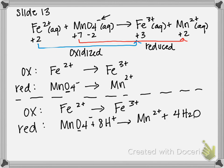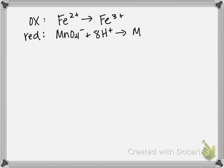I'm going to rewrite both of these on a new slide. My oxidation is still Fe2+ gives you Fe3+. And my reduction now is MnO4- plus 8H+ gives you Mn2+ plus 4H2O.